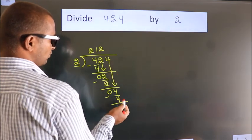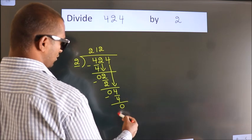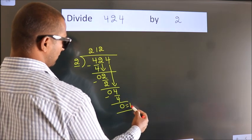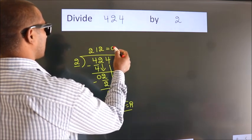No more numbers to bring it down. So we stop here. This is our remainder. This is our quotient.